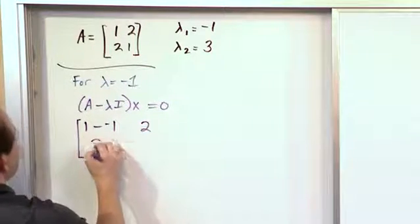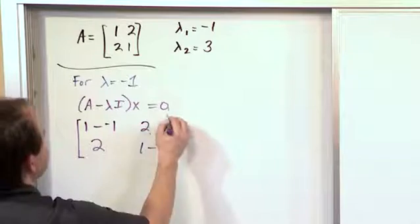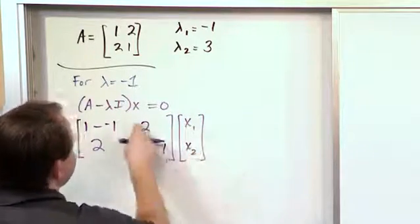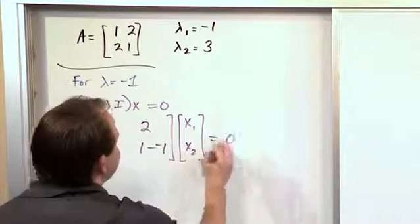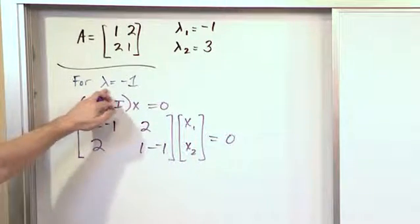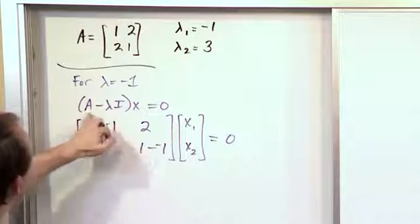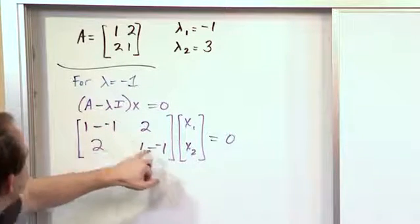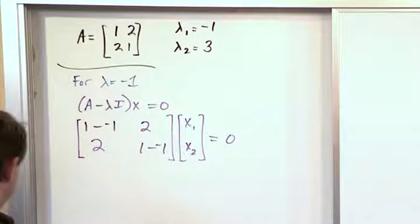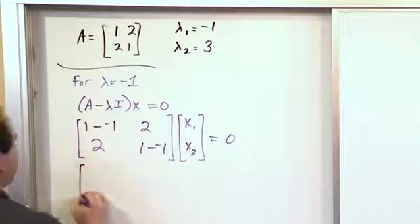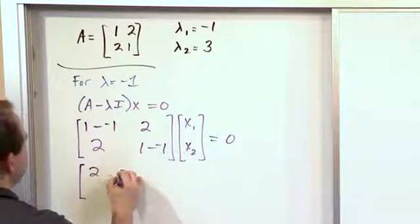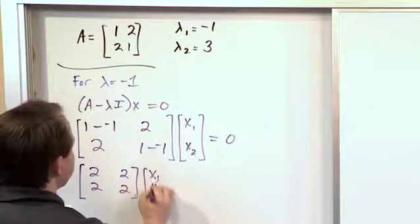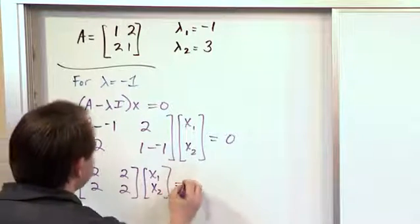Then we have 2, then we have 2, then it's 1 minus negative 1. And we say that this is [x₁; x₂] which we're saying is x and that's equal to 0. So basically we take the value of lambda, we stick it back into the eigenvector problem in an appropriate location and we basically try to solve it. Now if we come down here what this is going to give you is [2, 2; 2, 2] [x₁; x₂] equals 0.